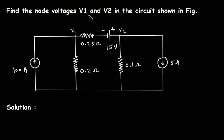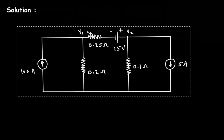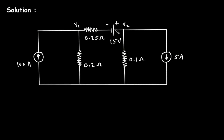Find the node voltages V1 and V2 in the circuit shown in the figure. We have to find node voltage V1 and node voltage V2. We will solve this using nodal analysis.